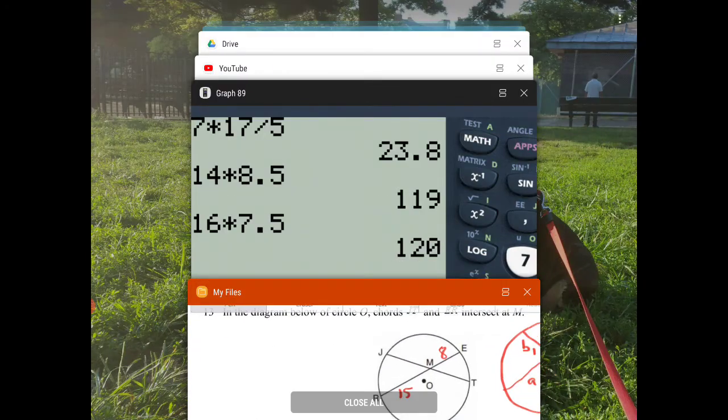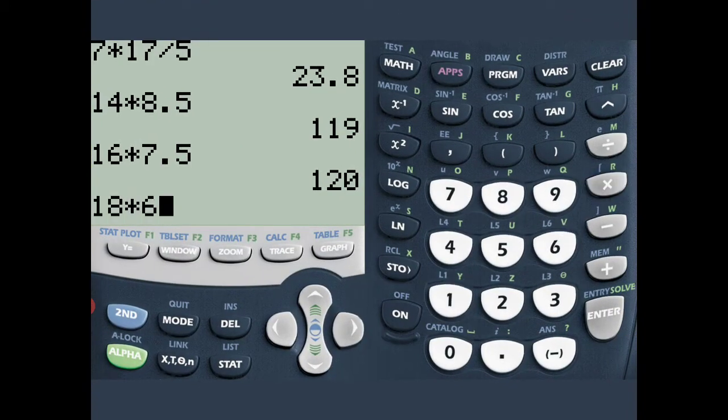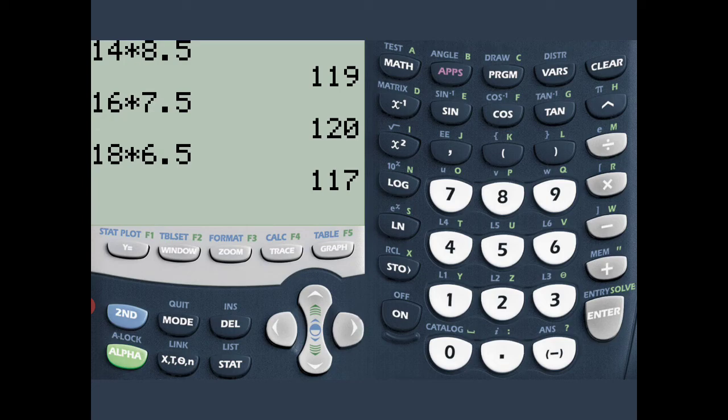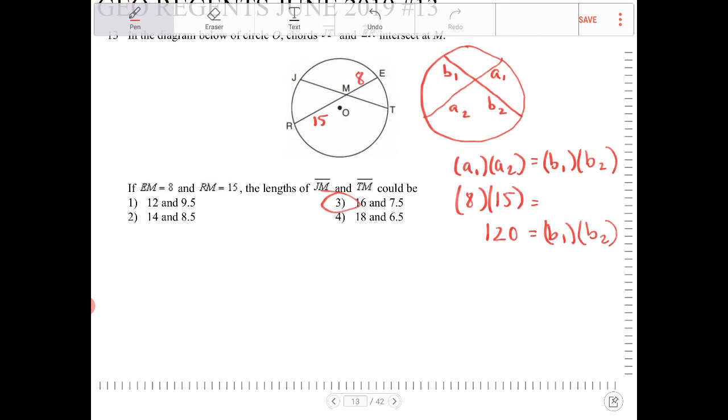18 times 6.5 would not work. It would go over times 6.5. Well, actually it went under. It's 117 only. So that's it.